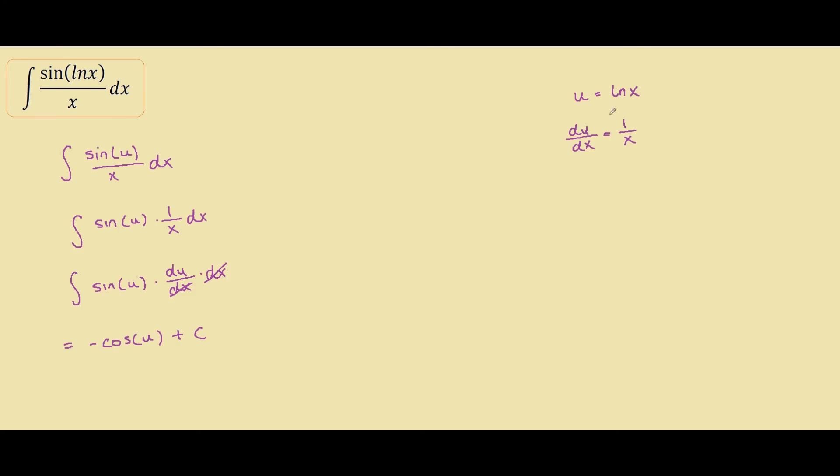Our last step is to substitute back in the u that we replaced earlier. So we would get negative cos of ln of x plus C, and that's our answer.